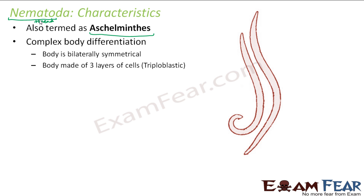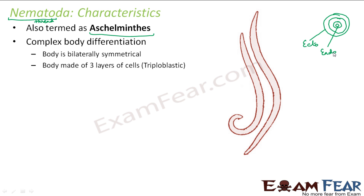From here onward, for most phyla, you will see they are all triploblastic and bilaterally symmetrical. They have all three germ layers: ectoderm, endoderm, and mesoderm. If you look at a cross-section, you will see an ectoderm on the outside, an endoderm on the inside, and in between you will have the mesoderm.